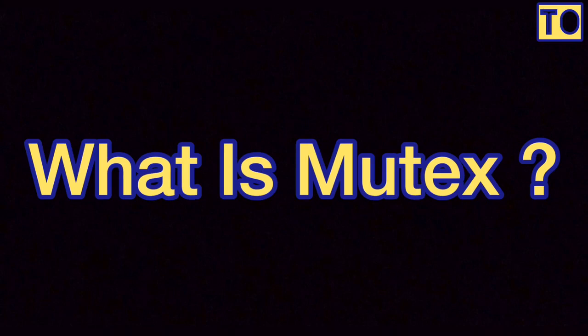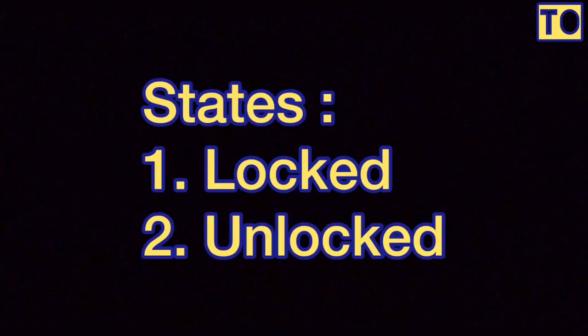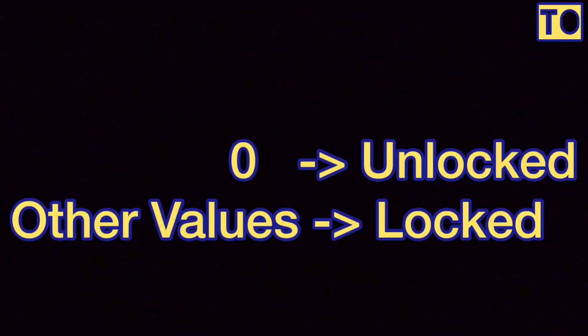Let's talk about Mutex. In Mutex, there are two states: the Locked state and the Unlocked state. If the value is zero, it is the Unlocked state.